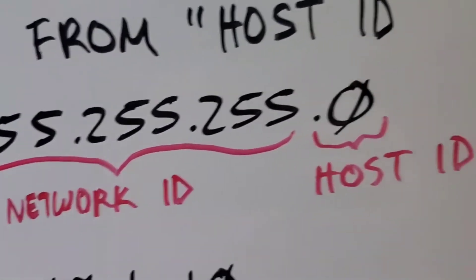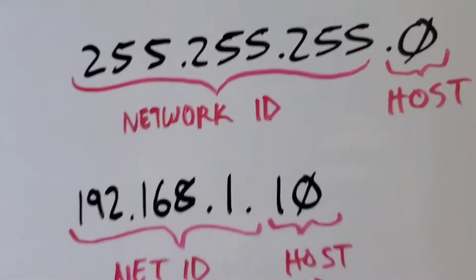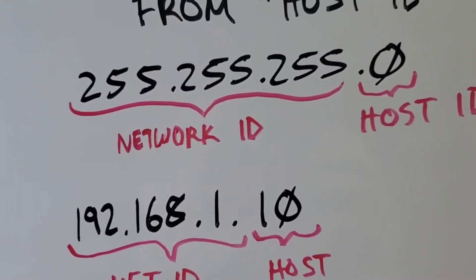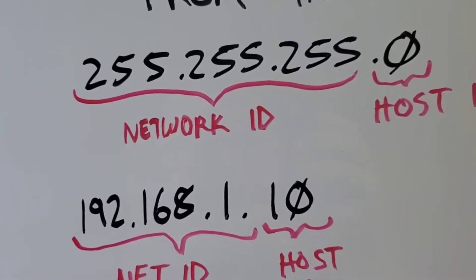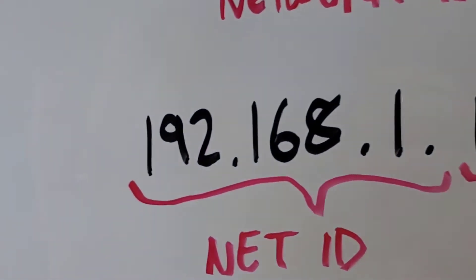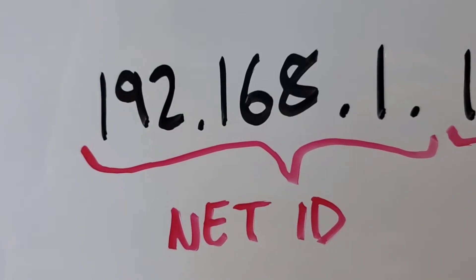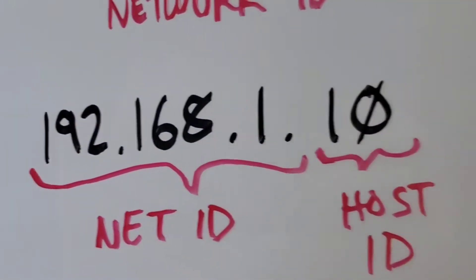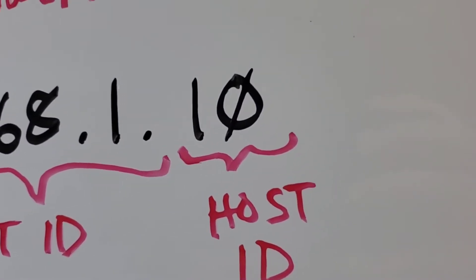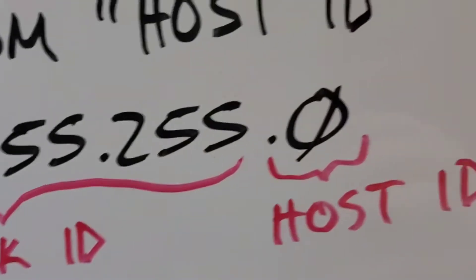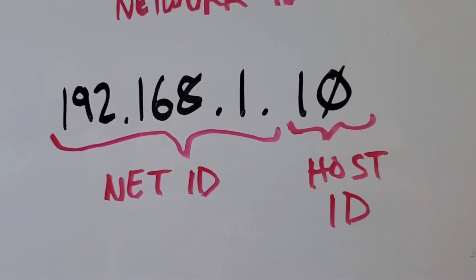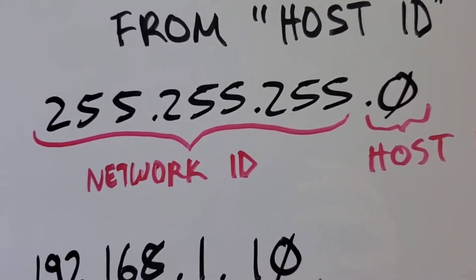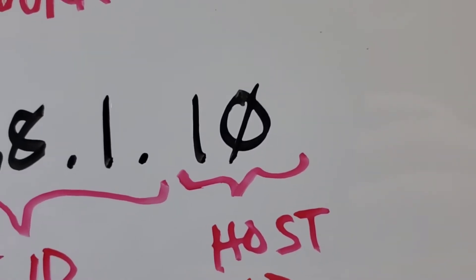So our network and host are separated depending on what numbers are in the subnet mask. When you pair subnet mask 255.255.255.0 with the IP address 192.168.1.10, that means the network ID of this IP address is 192.168.1 — because it matches where the 255s are located in the subnet mask. And the host ID, which represents each individual client, is where the zero is located in the subnet mask.